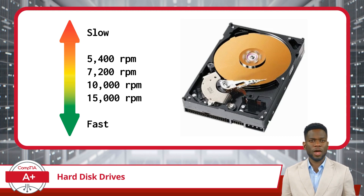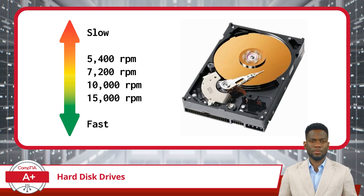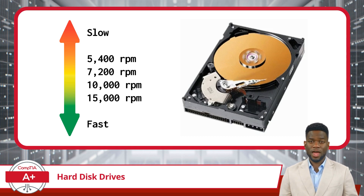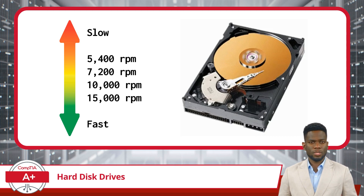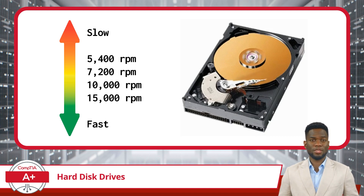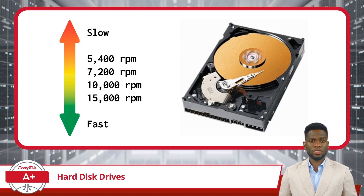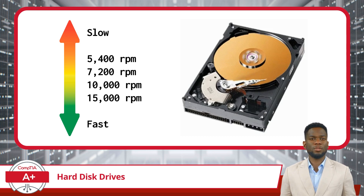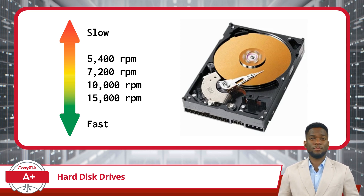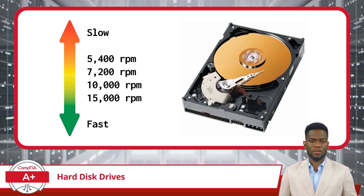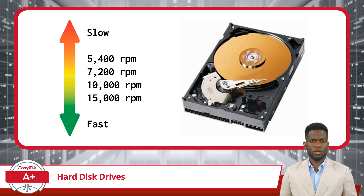The significance of RPM lies in its impact on data access times. With all other factors being equal, higher RPM generally translates into faster access times because the read and write head can traverse the spinning platter more swiftly, reaching the desired data more rapidly. For instance, a hard drive operating at 7,200 RPM typically boasts quicker read and write speeds compared to one spinning at 5,400 RPM. Similarly, HDDs with even higher speeds, such as 10,000 or even 15,000 RPM, further enhance access times, facilitating faster data retrieval and storage operations.